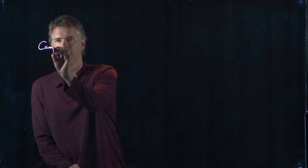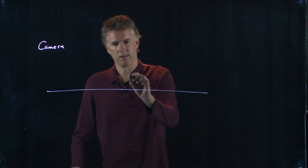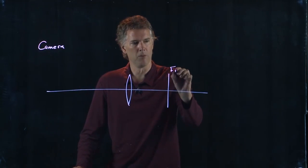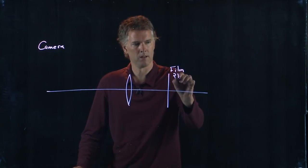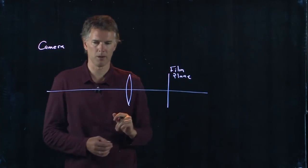So let's draw a camera. Here's the lens of the camera. Here is the film plane, or the CCD plane. This is where your retina would be in your eyeball.